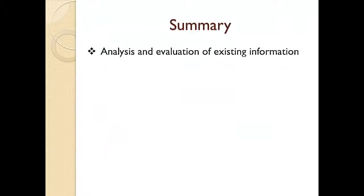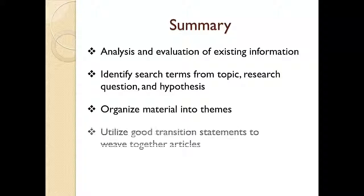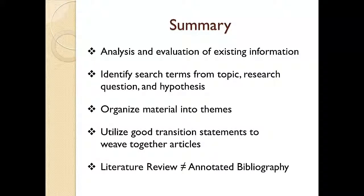Let's conclude by reviewing what I covered in this lesson. A literature review is an analysis and evaluation of existing information on the research topic. Begin your literature search by identifying terms from your research topic, research question, and hypothesis. Once you have located your material, organize it into theme groups. When writing the literature review, utilize good transition statements to weave your articles together. And finally, a literature review and annotated bibliography are not the same. Thank you for listening — I hope you now have a better understanding of how to create a good literature review.